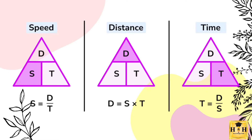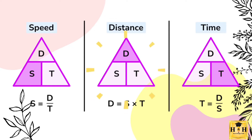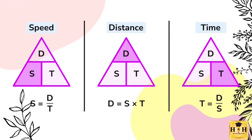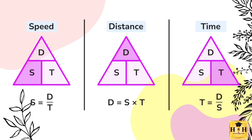Speed, distance, and time are all interrelated. Speed is determined by dividing distance over time. Distance is determined by multiplying the speed times the time the object has traveled. And time is determined by dividing distance over speed.